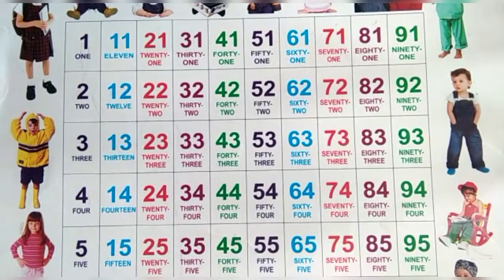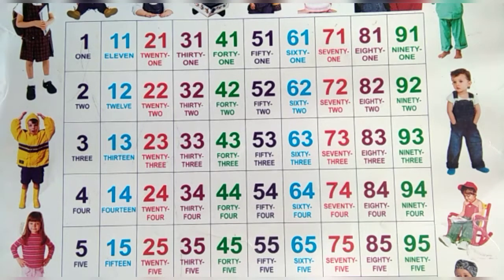Hi children. In our previous class we learned about straight lines: horizontal, vertical, slanting, and curve lines. We also learned about geometrical objects: triangle, rectangle, square, circle, and also cube, cuboid, cylinder, cone, and sphere.